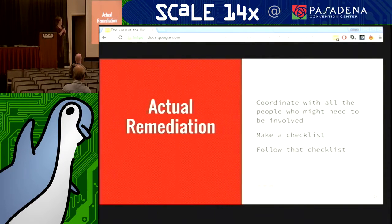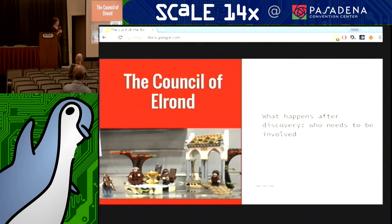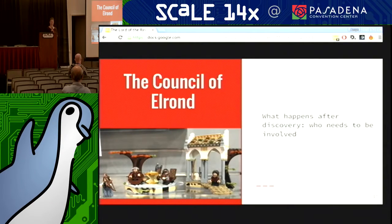The actual remediation lines up: make a checklist, follow that checklist. Remember that having that checklist is going to save you from other problems down the road. So the way this works is — you've made it to Rivendell, you have the Council of Elrond, everyone who needs to be involved is there. You'll have the elves — sometimes they're helpful, sometimes they're not, you can't really be sure, but they're definitely there.